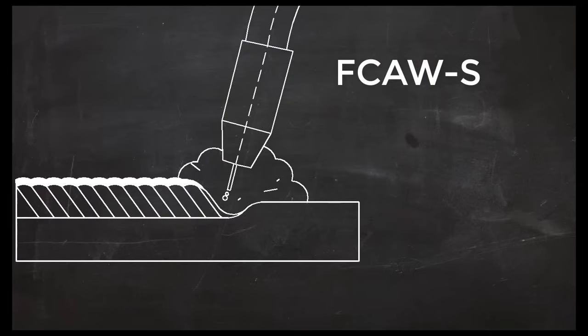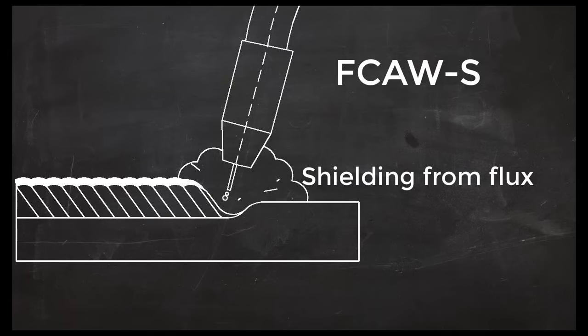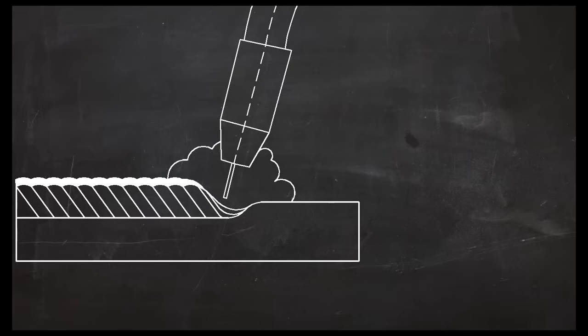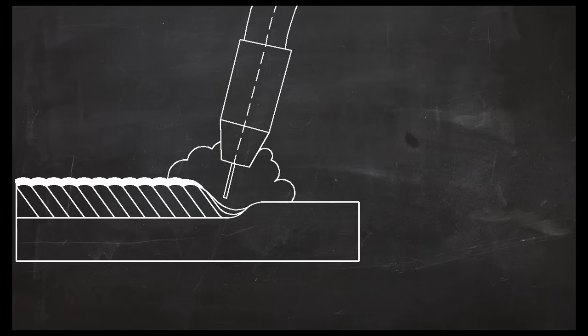Flux core electrodes that are designed to be self-shielded contain a flux that completely protects the molten weld pool. The flux in these electrodes creates a protective cloud that prevents gases like nitrogen and oxygen from reacting with the hot metal.